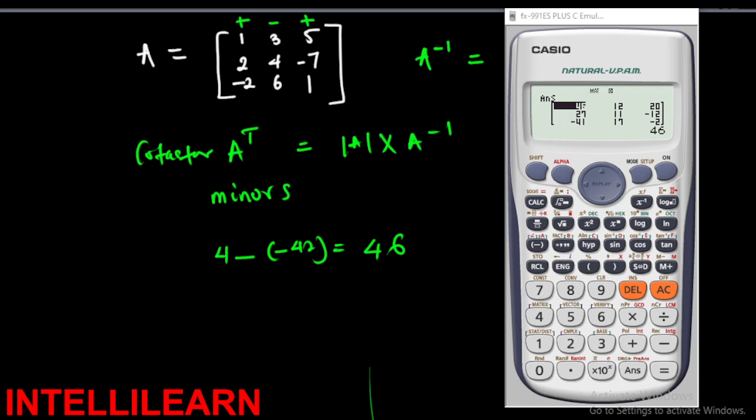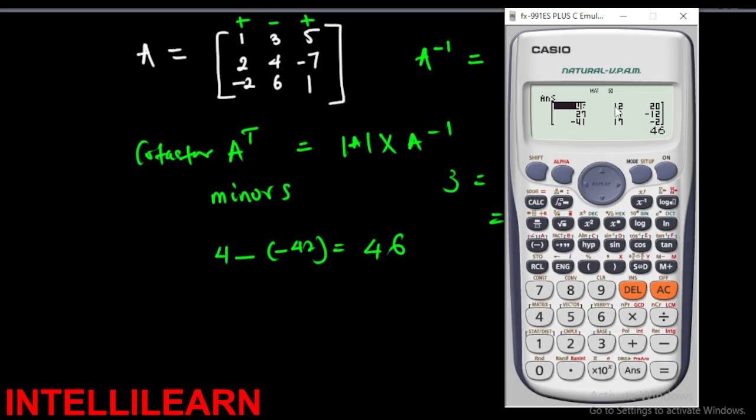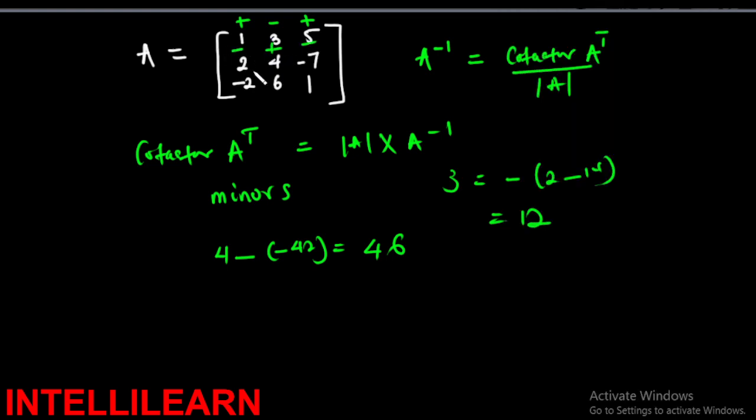Check our calculator, we have 46. Let's do the minor of 3. For 3 the minor will be—it has a negative, so we have negative, 2 minus 14. So 2 minus 14, that's -12. So that gives 12. Look at that, 12. You can do any other number, pick another one.